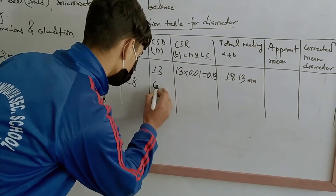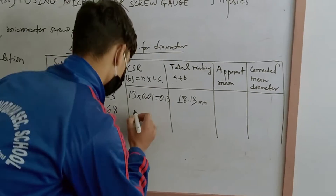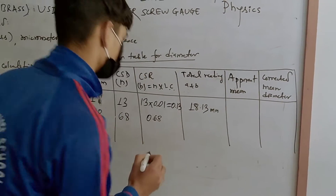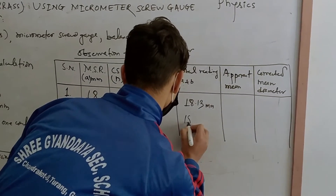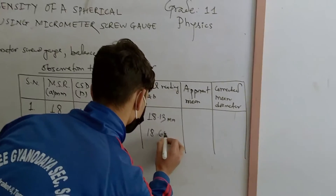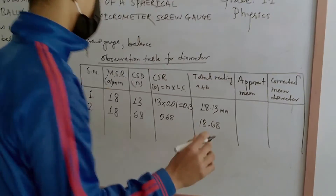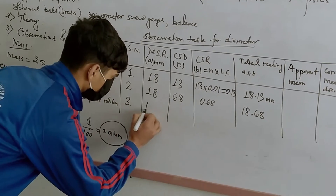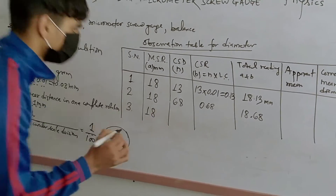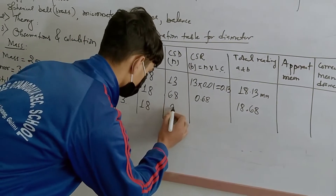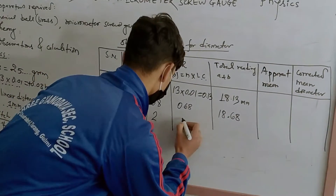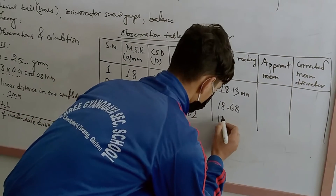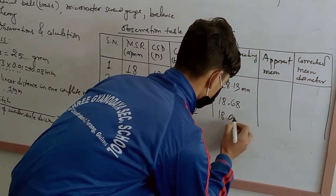The reading is 0.68 mm on the circular scale, giving 18.68 mm. That is the second reading. For the third reading, again the main scale is 18, circular scale division is 2, so 0.02 mm, giving 18.02 mm.